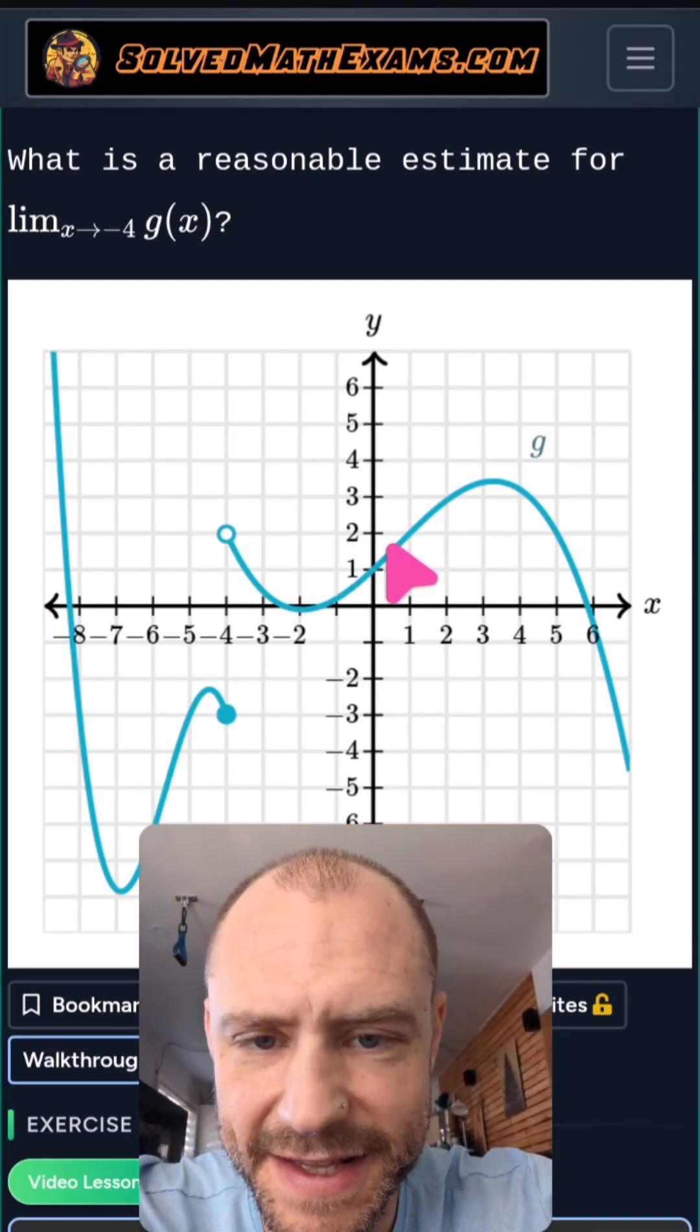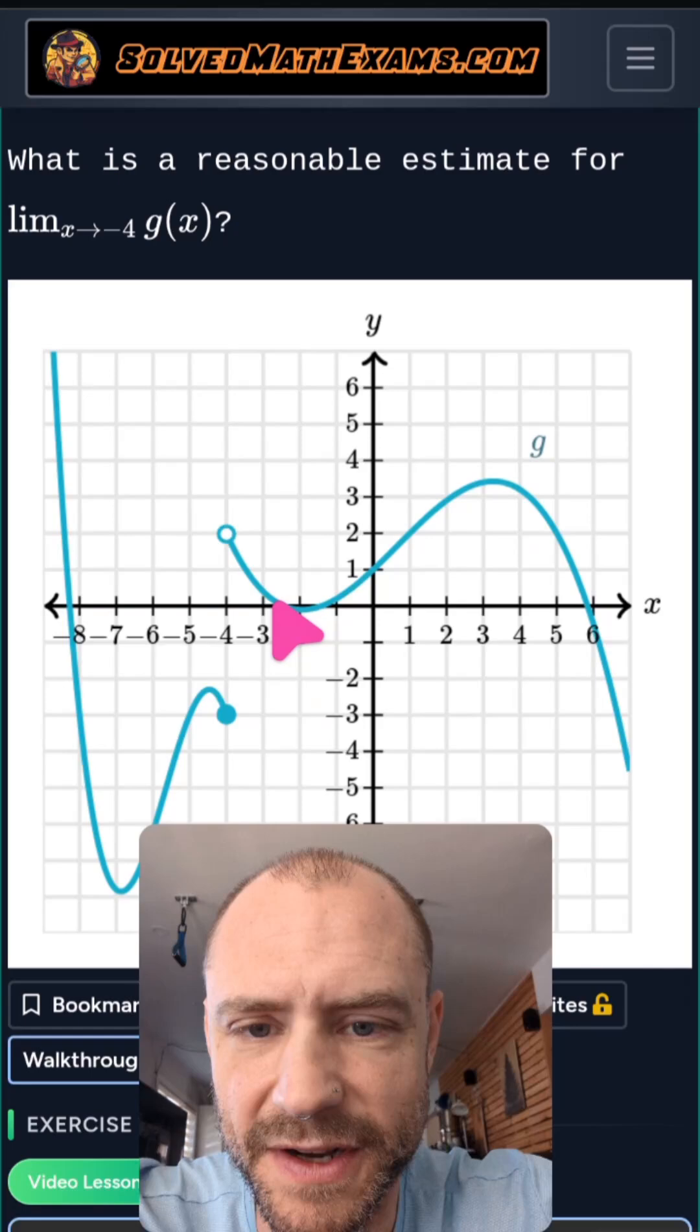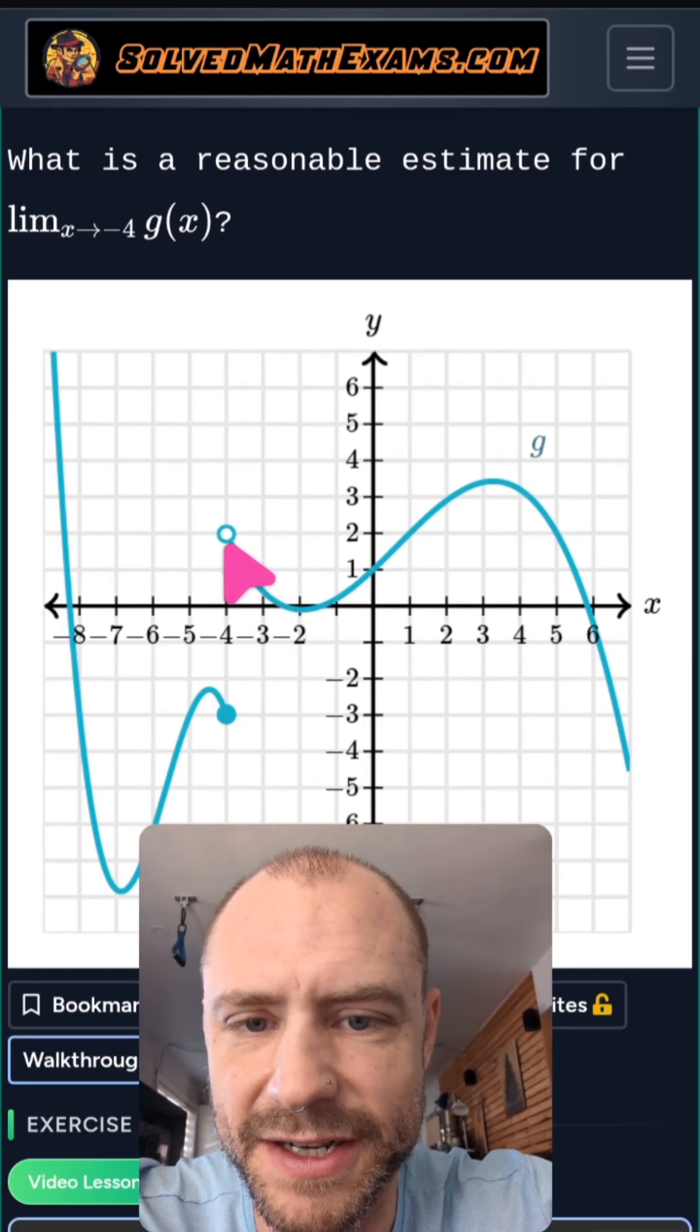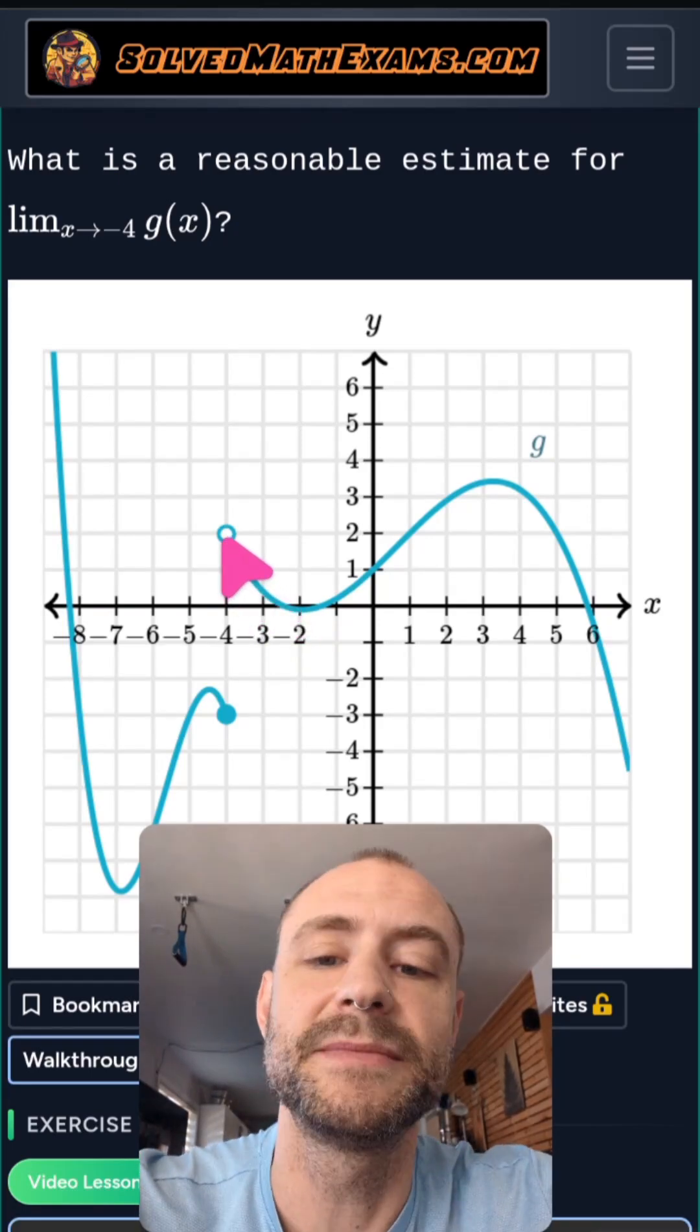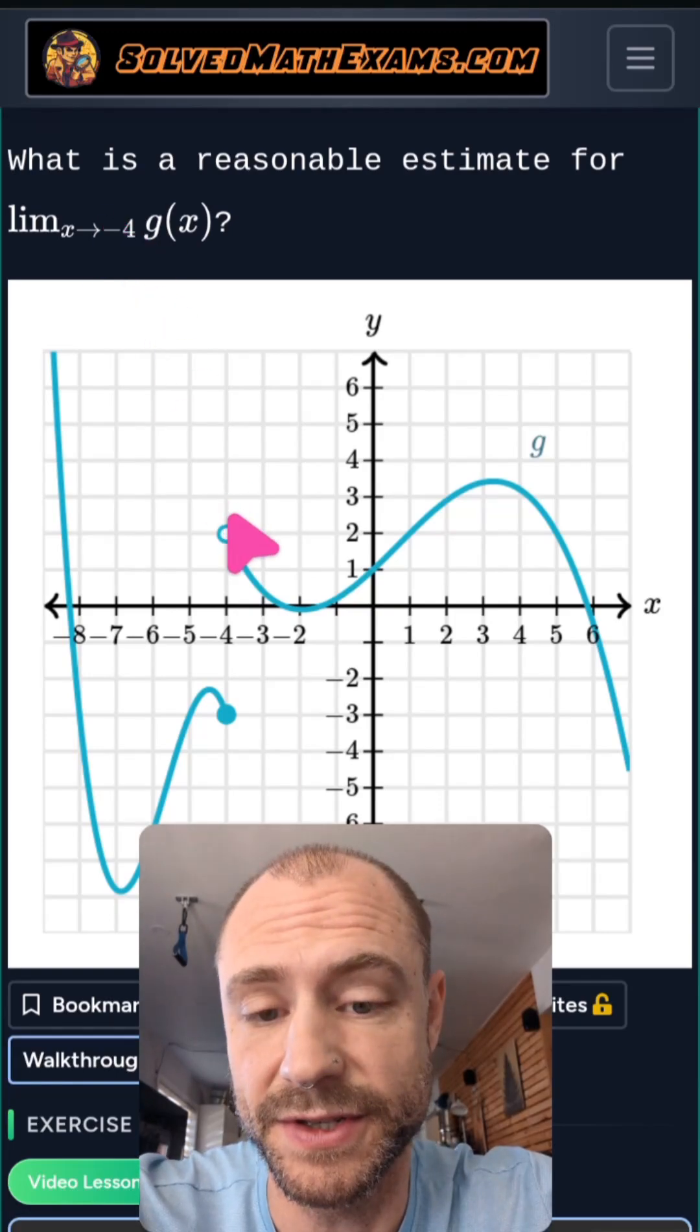So this g function, as x gets closer to negative 4, this g function is going up here and headed towards 2. So we can estimate that the right hand limit portion of this is equal to 2.